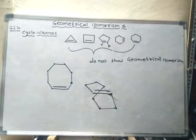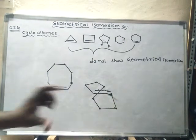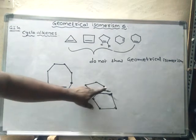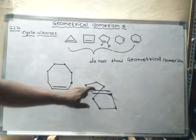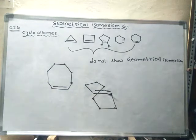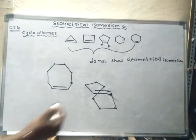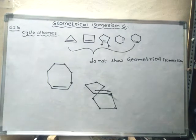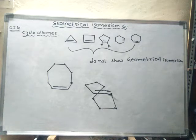The 8-carbon ring can undergo twisting to form the trans double bond arrangement. This twisting is possible, giving us the trans form of cyclooctene.